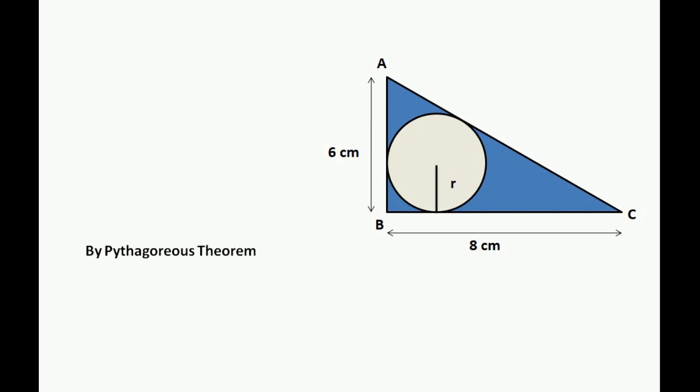Since the triangle is a right angle triangle, by Pythagoras theorem, we can write AC squared equals AB squared plus BC squared, which equals 6 squared plus 8 squared. Therefore, AC squared equals 36 plus 64 equals 100, so AC equals 10 cm.